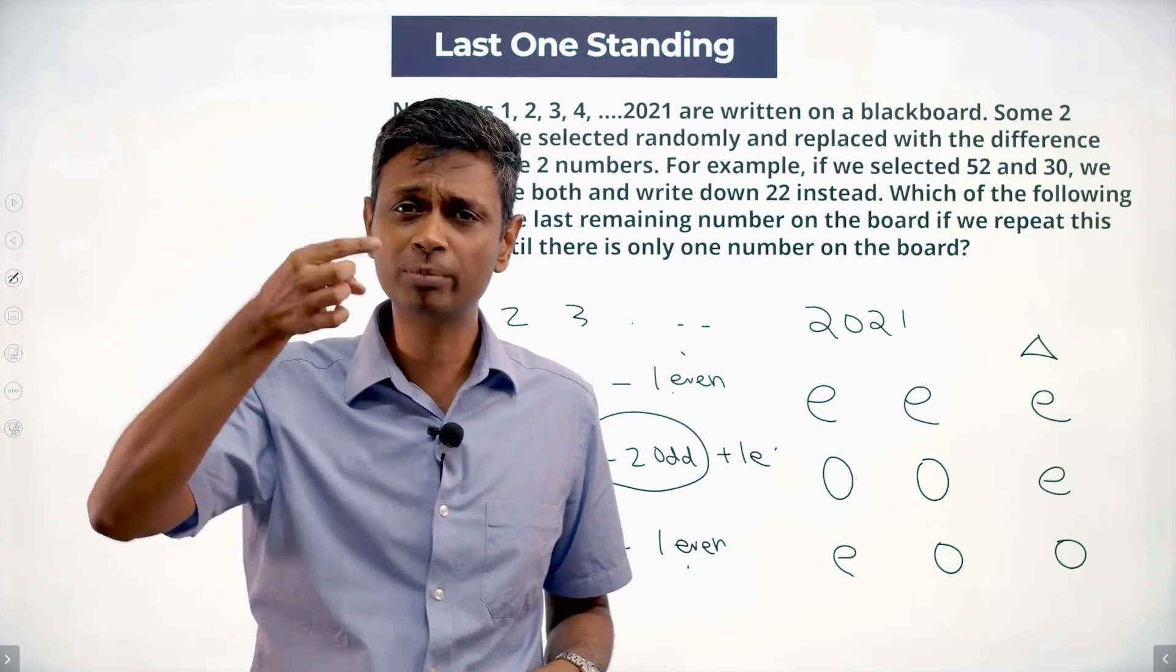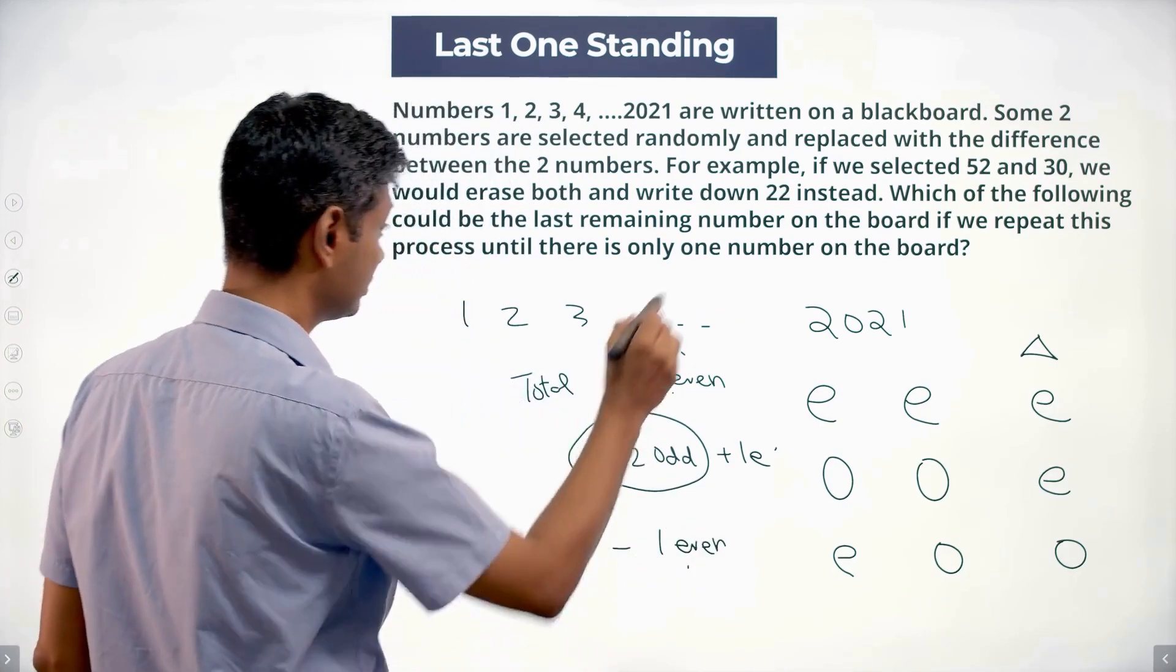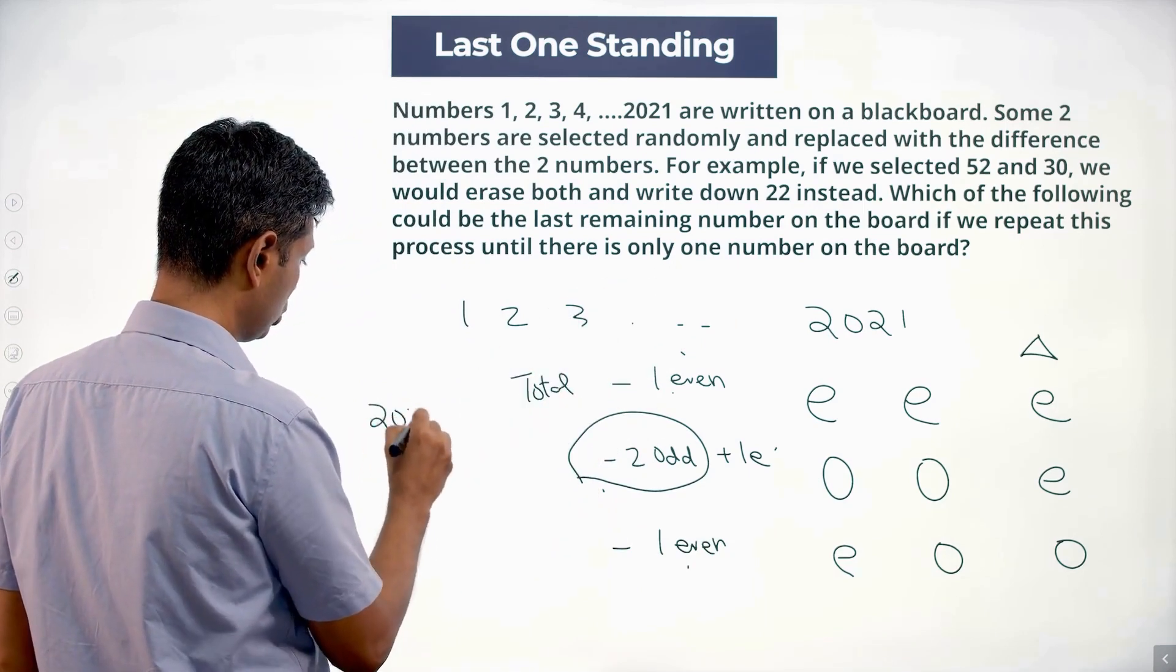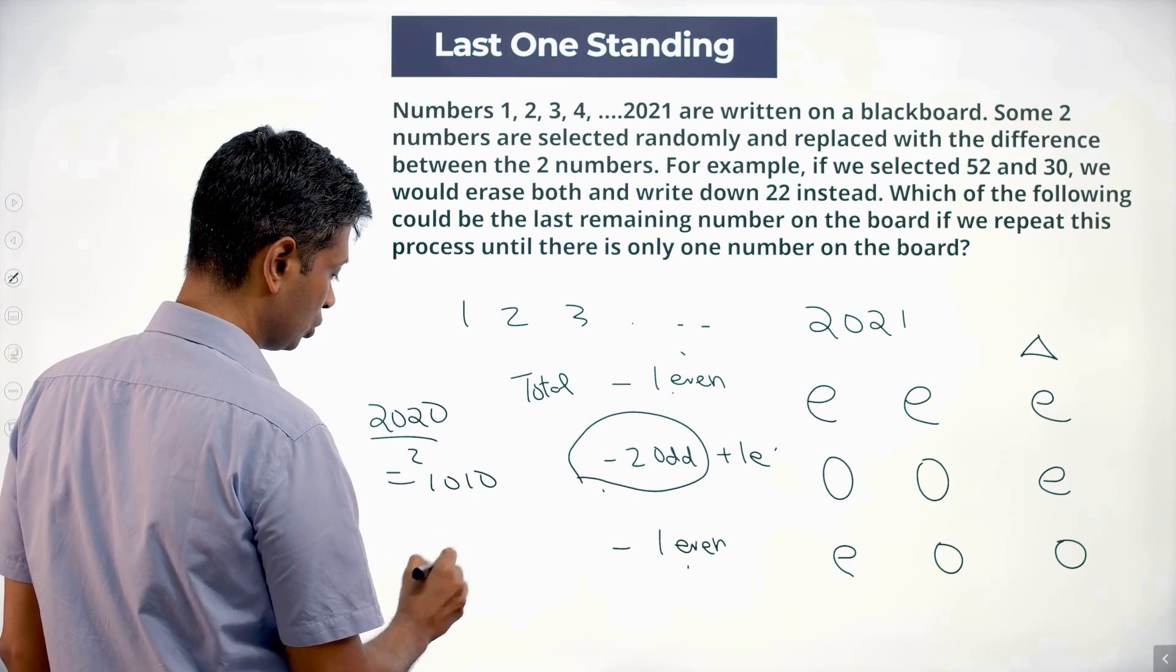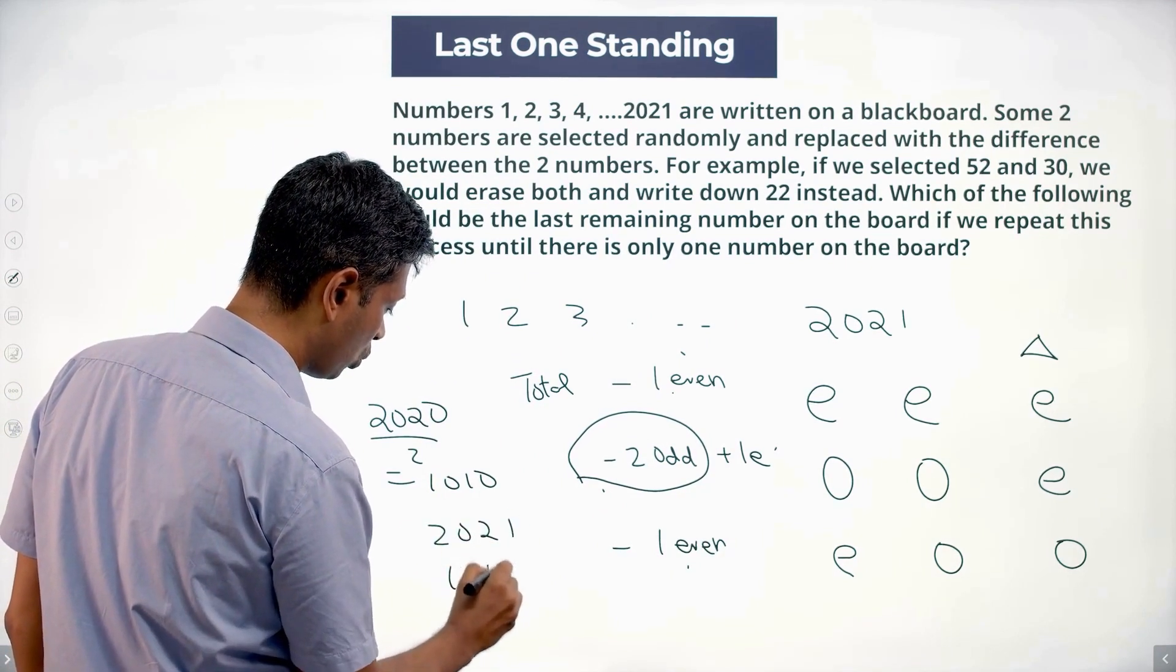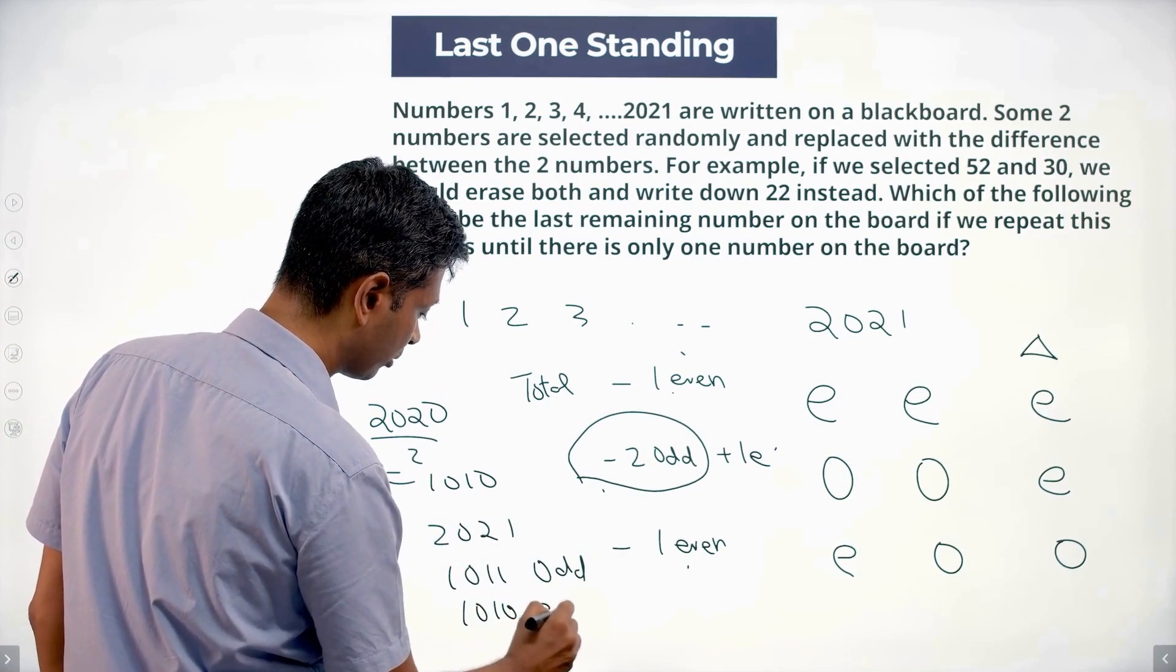Either the number of odd numbers reduces by two or it stays as it is. In 2021, that's an odd number. 2020 by 2 is 1010. So in 2021, there will be 1011 odd numbers and 1010 even numbers.